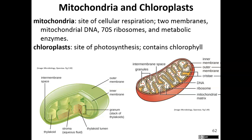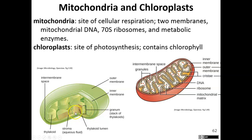The chloroplast is the site of photosynthesis. Chloroplasts contain chlorophyll, which is the pigment molecule that traps sunlight energy. We use that sunlight energy along with carbon dioxide and water to produce carbohydrates.